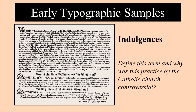Early surviving examples of typographic designs include indulgences. I want you to be able to define this term, and I want to discuss why this practice by the Catholic Church was extremely controversial. In this picture, we see an example from Johann Gutenberg printed in 1454 AD.